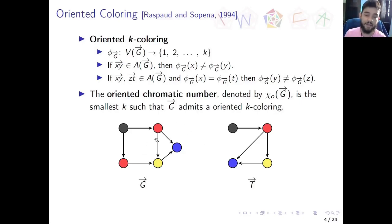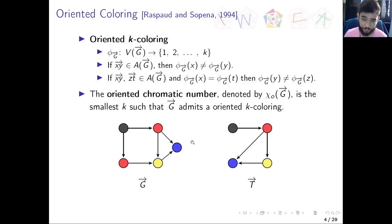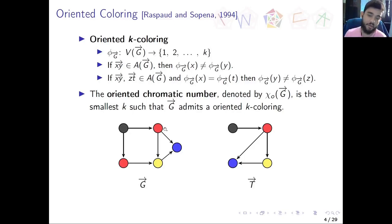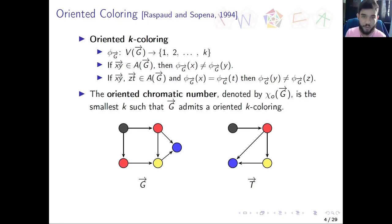From the second rule, if we have a path of size 2, the first and last vertex must have different colors — and this applies globally across the graph. The oriented chromatic number of G-arrow is the smallest K such that G-arrow admits an oriented K-coloring. We present an example of a four-color oriented coloring for graph G, where black connects to red, red connects to yellow and blue, and yellow connects to blue.